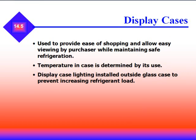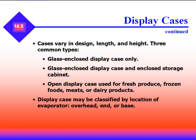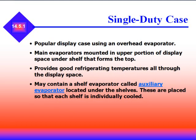Display cases are used to provide ease of shopping and allow viewing by the purchaser while maintaining safe refrigeration. The temperature in the case is determined by its use. Display case lighting is installed outside the glass case to prevent increased refrigerant load. Display cases come in varying design, length, and height — either glass-enclosed only or glass-enclosed with storage cabinet. Open display cases are used for fresh produce, frozen foods, meat, and dairy products. Display cases may be classified by the location of the evaporator: overhead, end, or base. The single-duty display case uses an overhead evaporator mounted in the upper portion of the display space, providing good refrigerating temperatures throughout. It may also contain a shelf evaporator, called an auxiliary evaporator, located under the shelves so each shelf is individually cooled.